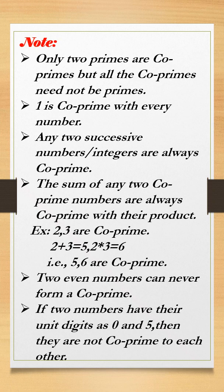For example, successive pairs such as 8 and 9, 10 and 11, and 30 and 31 are always co-prime.